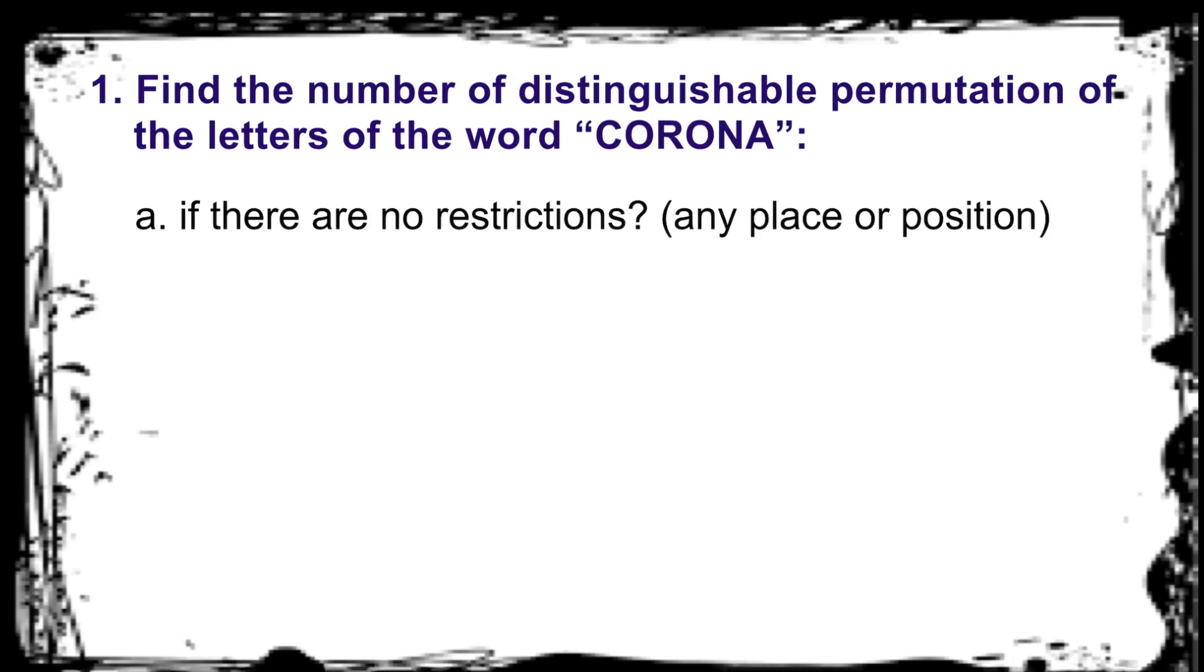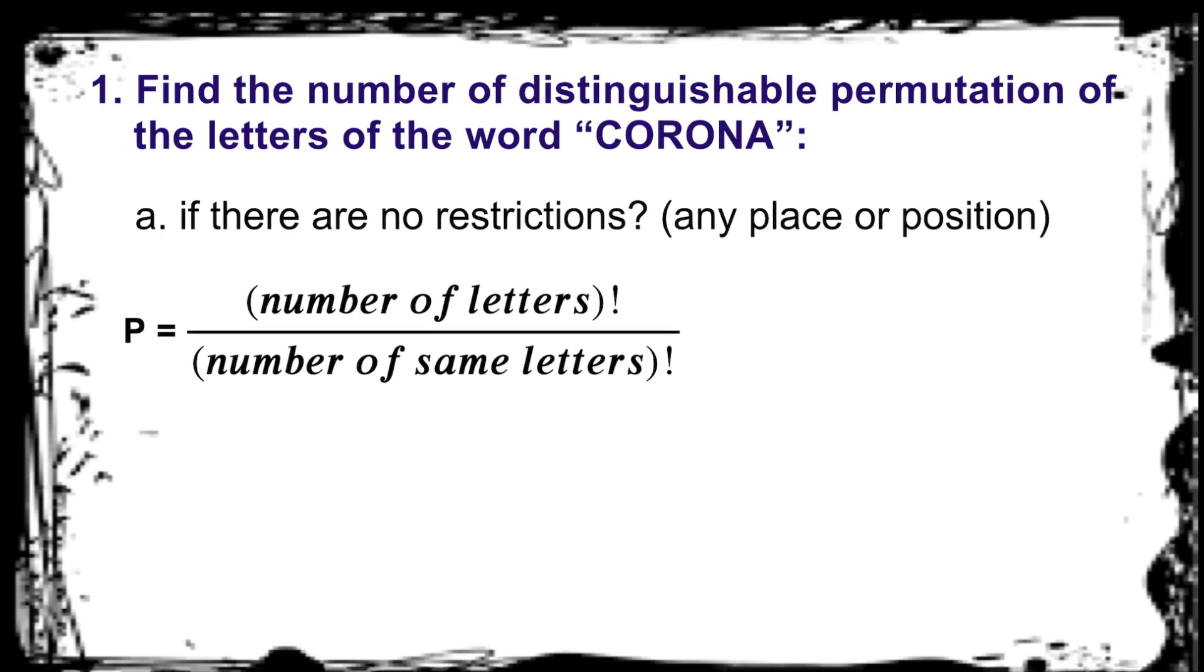The formula is P equals number of letters factorial divided by number of same letters factorial. How many letters do you have? Yes, you got it right. There are 6 letters. So that is 6 factorial. Since we need to count the distinguishable permutation.